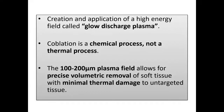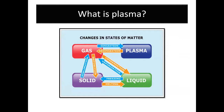It is important to recognize that plasma is a state of matter equal to solid, liquid, and gas. Ionized gas is called plasma, and this is exactly what we use when we talk about coblation.